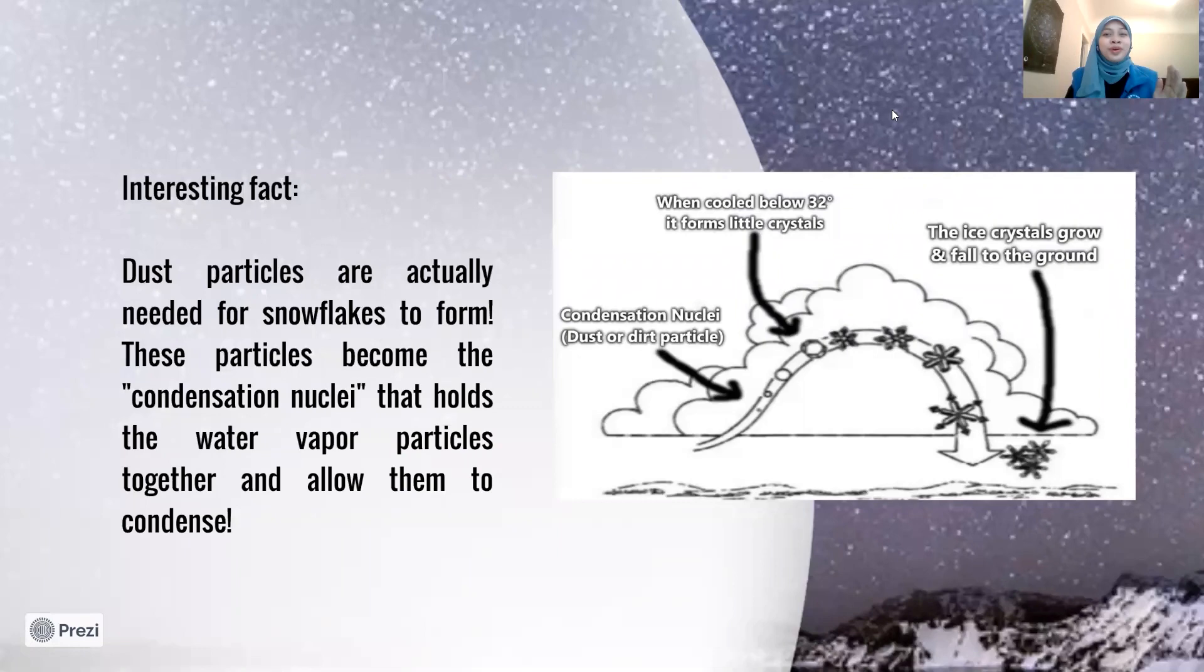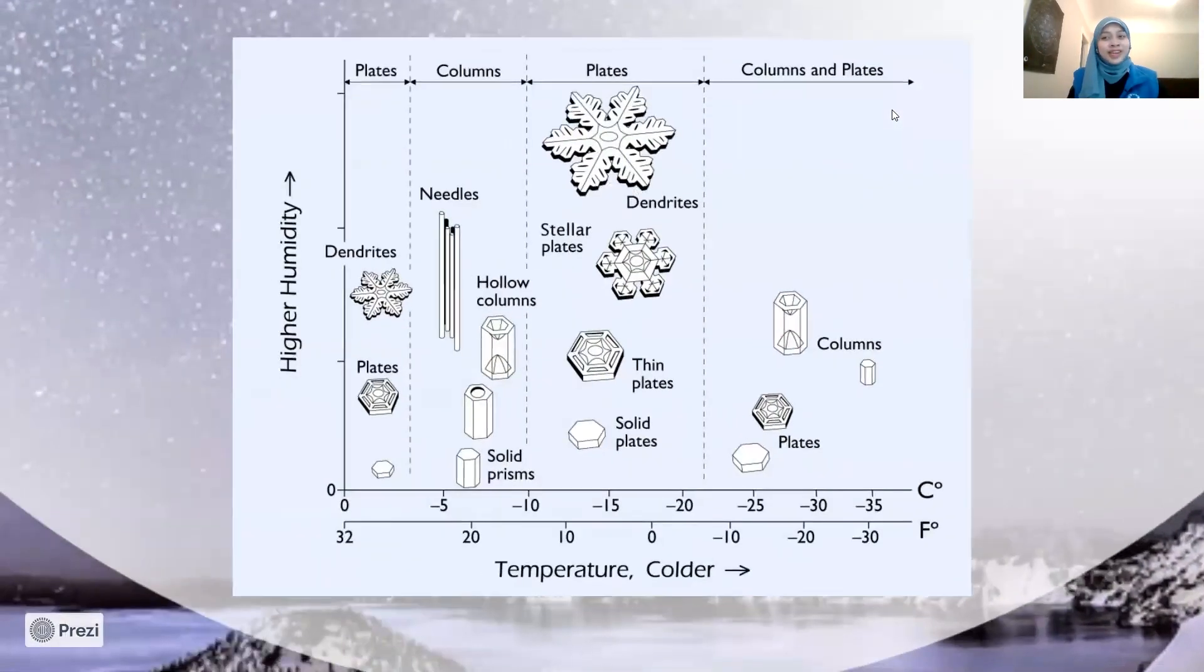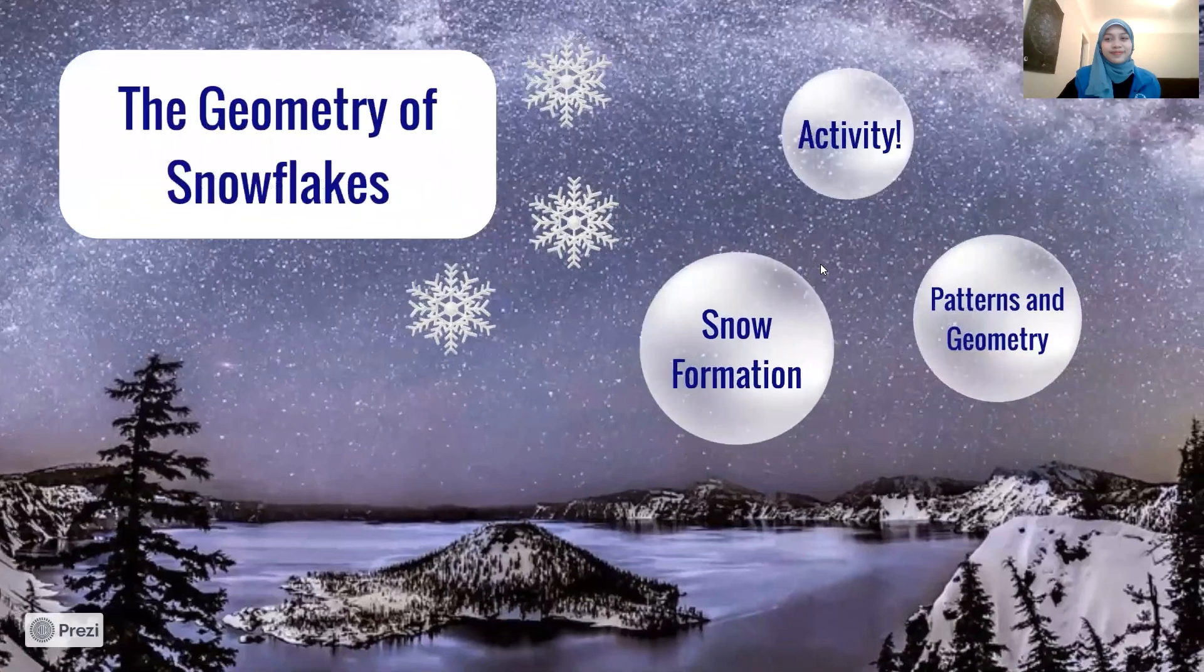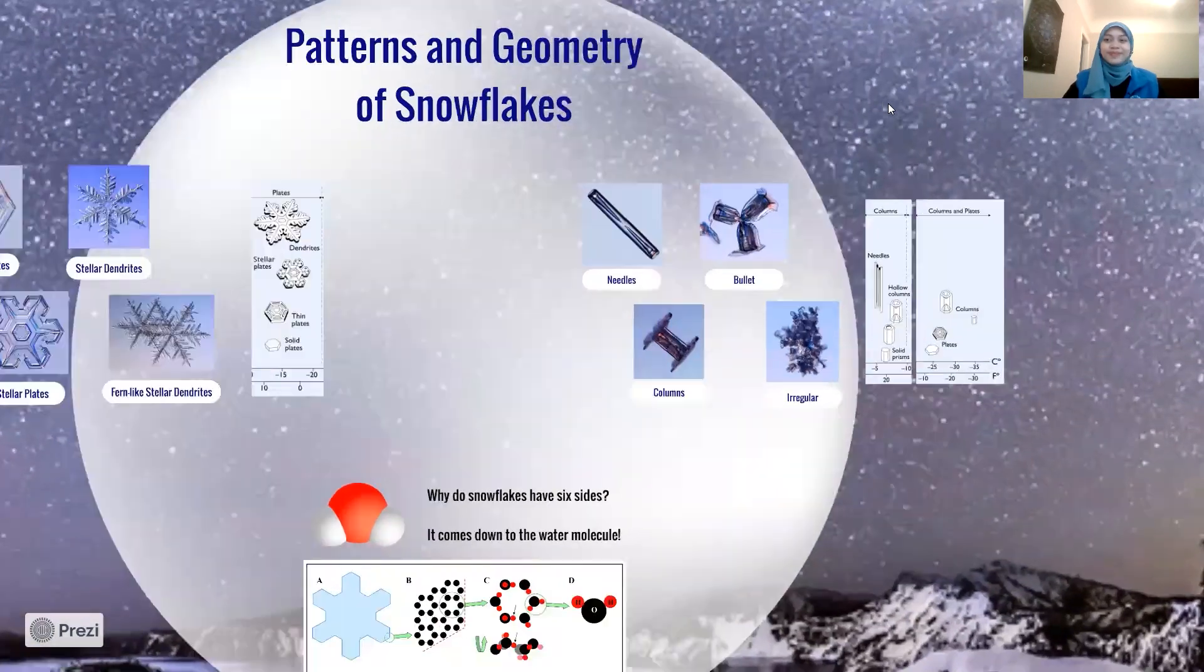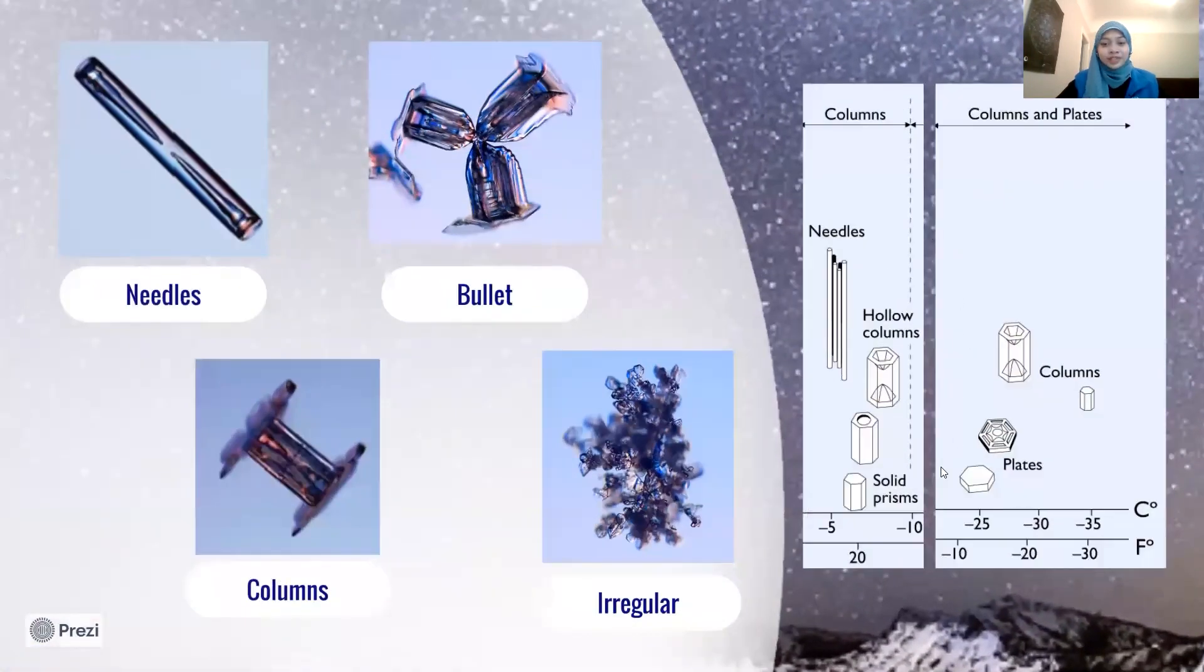When we zoom in a little more, we see that depending on the temperature, snowflakes can have very different shapes as shown by this chart here. So now let's get into the pattern and geometry of snowflakes. It is unlikely that we'll ever find two identical snowflakes, but we can still try to classify them according to their shapes. When the temperature is around minus 5 to minus 10 degrees Celsius, or around 20 degrees Fahrenheit, we can get snow crystals of these shapes.